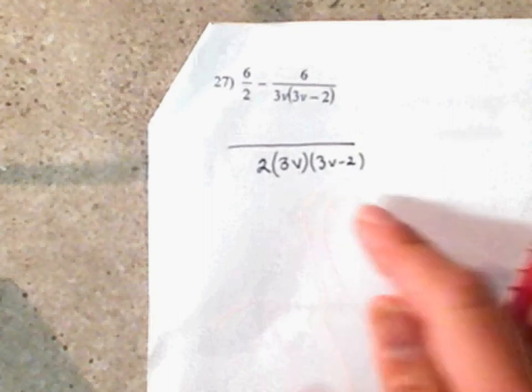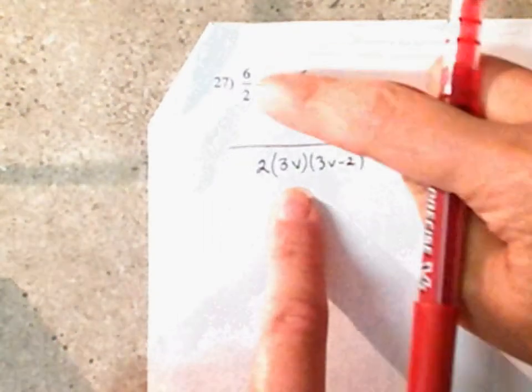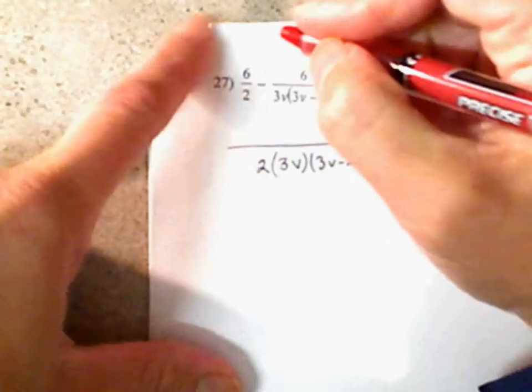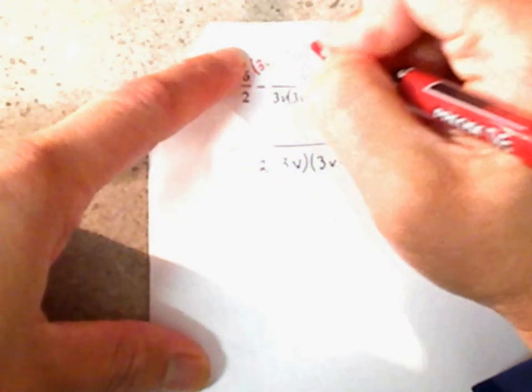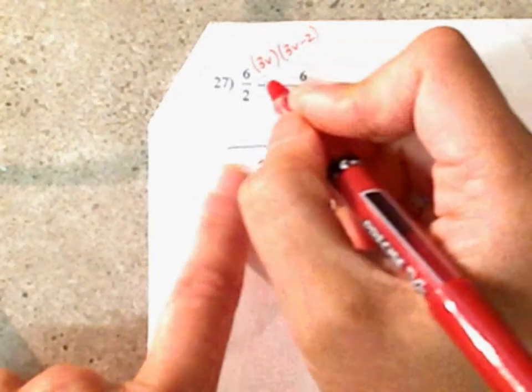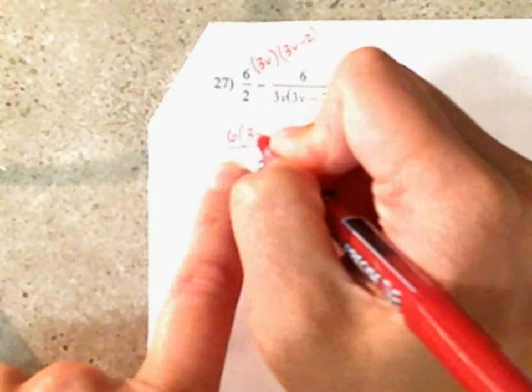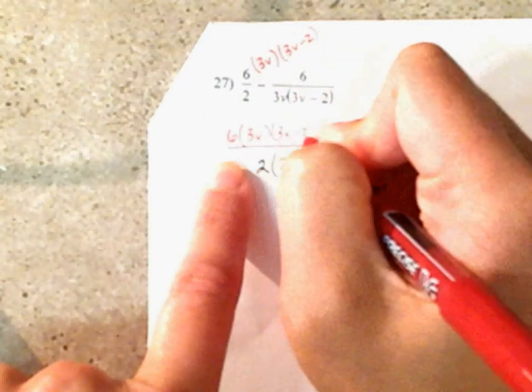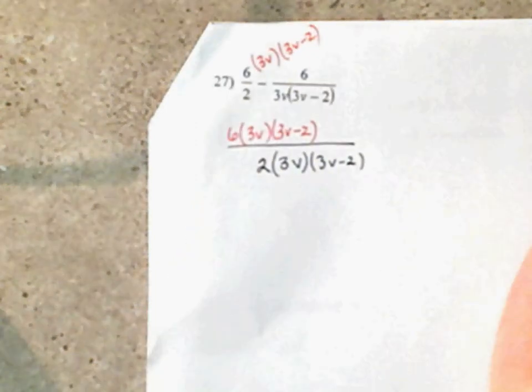Compare this one to each other. Do you see how you're missing 3V times 3V minus 2? So that's what you're going to multiply this one by. I'm going to go ahead and bring it down: 6 times 3V times 3V minus 2, because that is what you are missing.